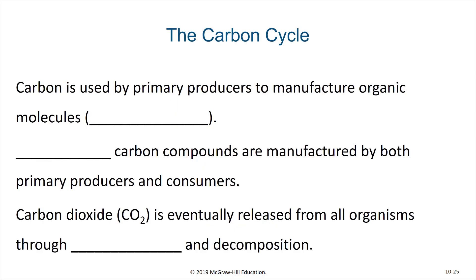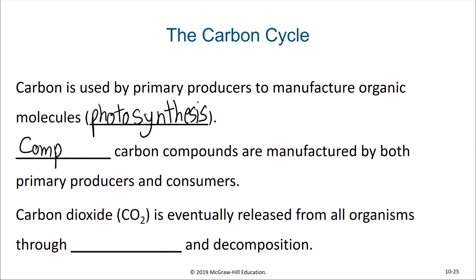In ecosystems, we often talk about nutrient cycles, and some of the major nutrients include carbon, nitrogen, and phosphorus. Carbon is used by primary producers to manufacture organic molecules through photosynthesis. These initial photosynthetic products are then converted into more complex carbon compounds, either by the primary producers themselves or by consumers. Carbon dioxide is eventually released from all organisms through respiration and decomposition.